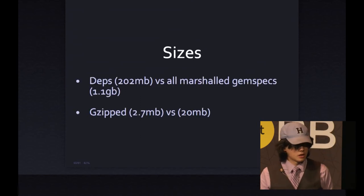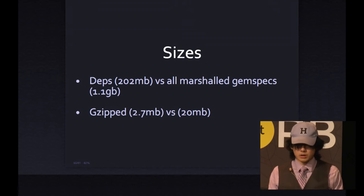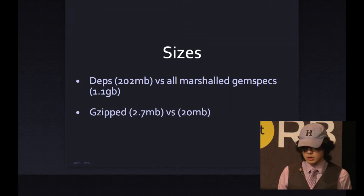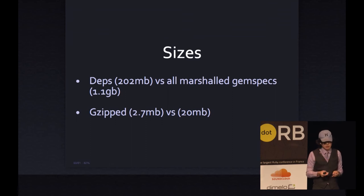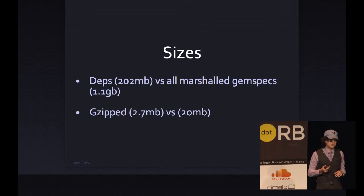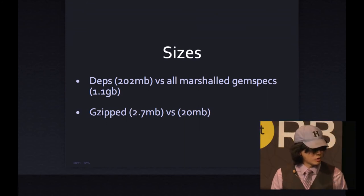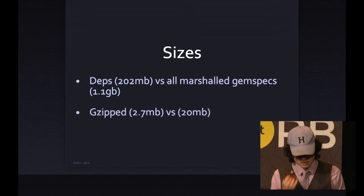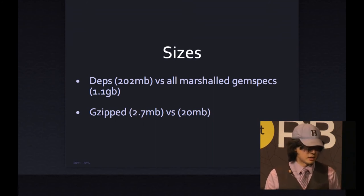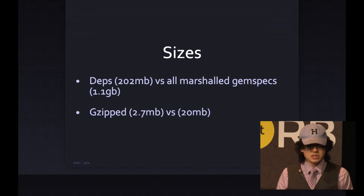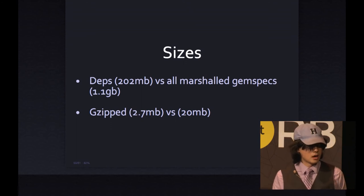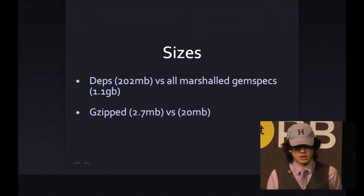To give some context on sizes: if you generate a deps file for every gem in RubyGems, it takes about 200 megabytes. To get the same dependency information using the modern index, you'd have to download all the gem spec files, which is about 1.1 gigabytes. So 200 megabytes is a lot more feasible for local caching. And if you gzip these files, you can drop it down to 2.7 megabytes, versus 20 megabytes for the compressed gem specs.